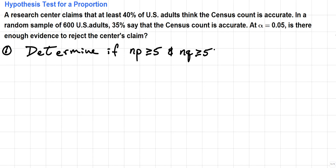That means we need to know what n is, what p is, and what q is. In this case, n is going to be the number of adults in the sample, so n equals 600.